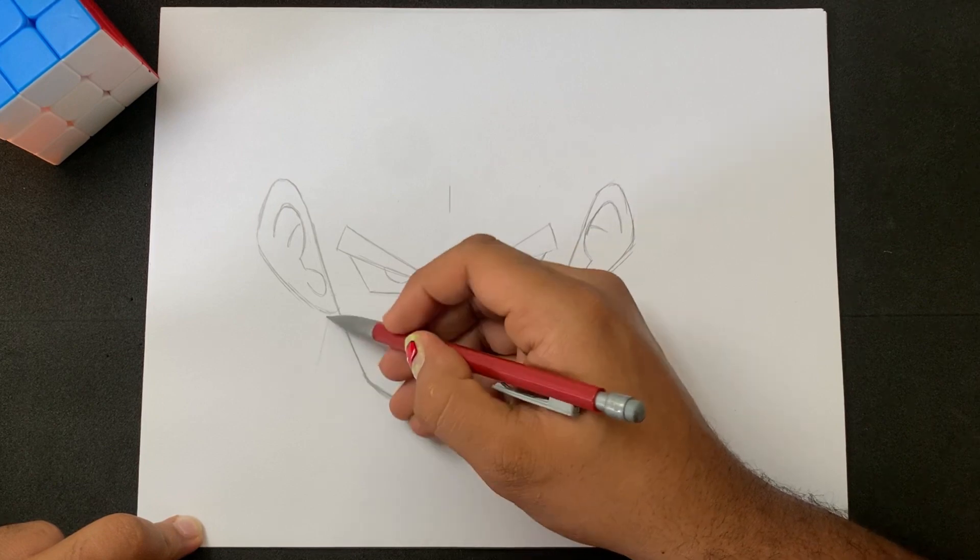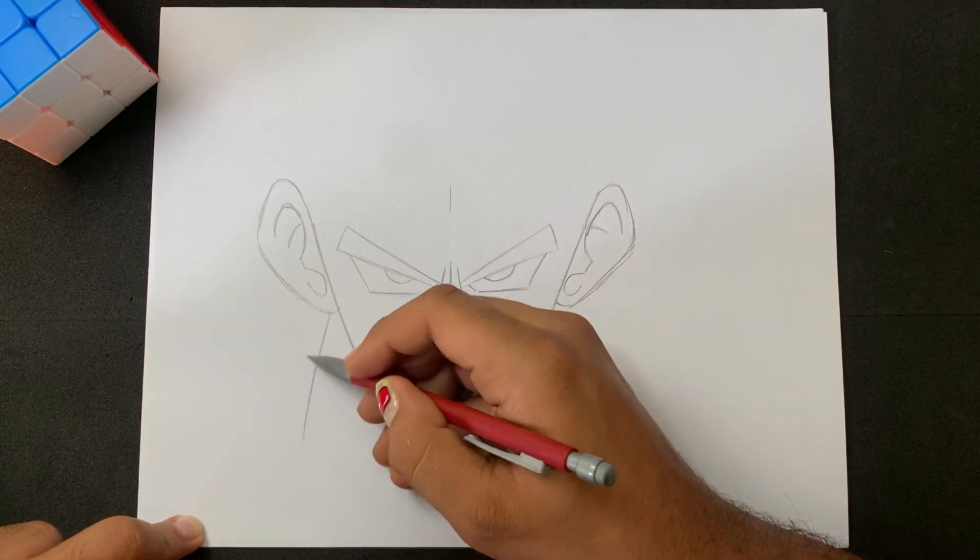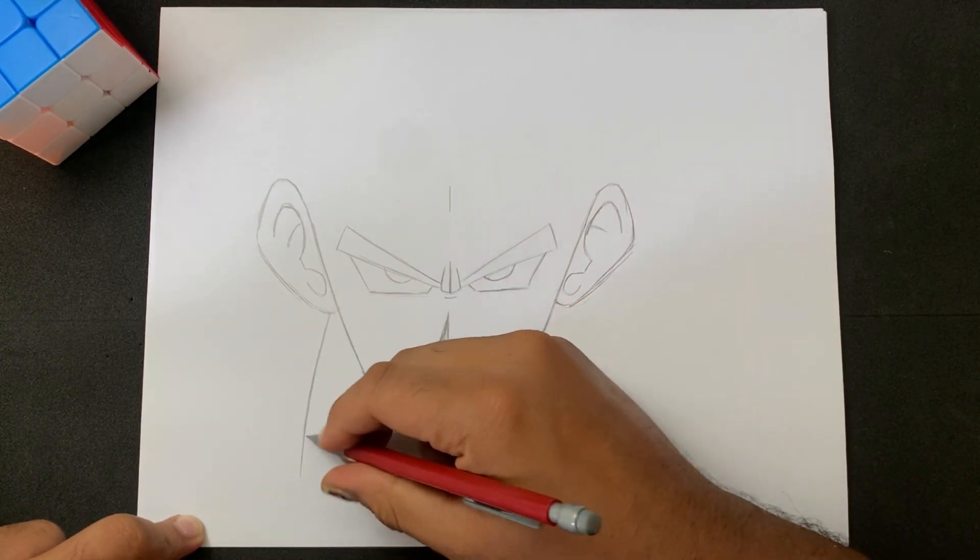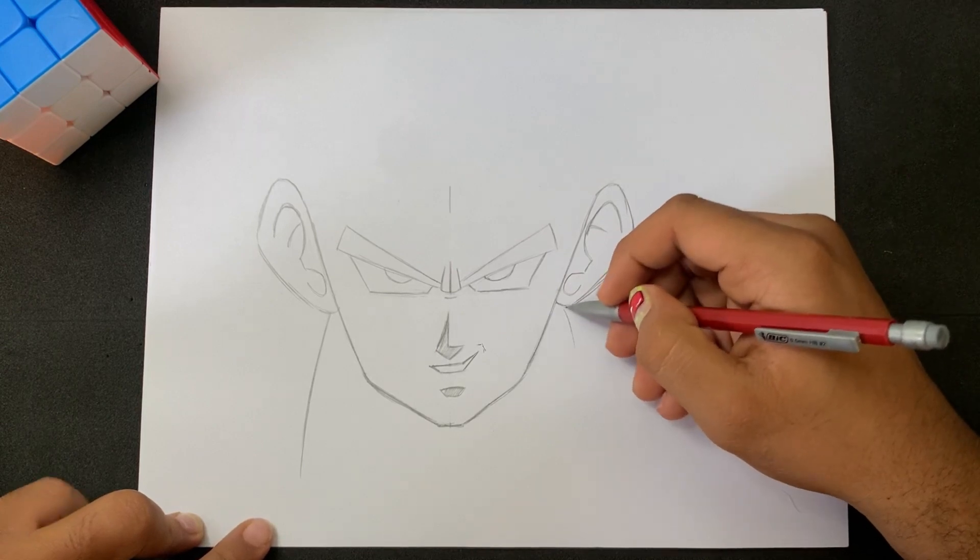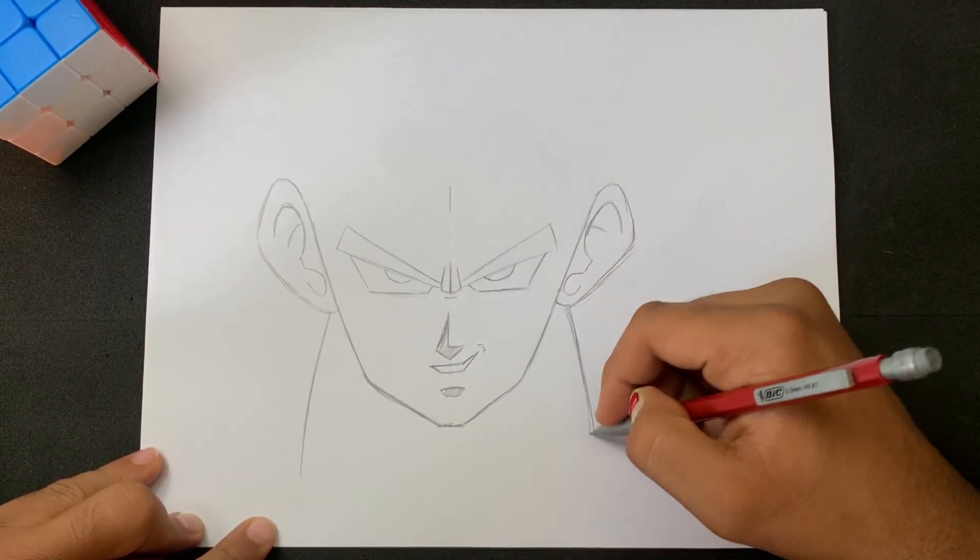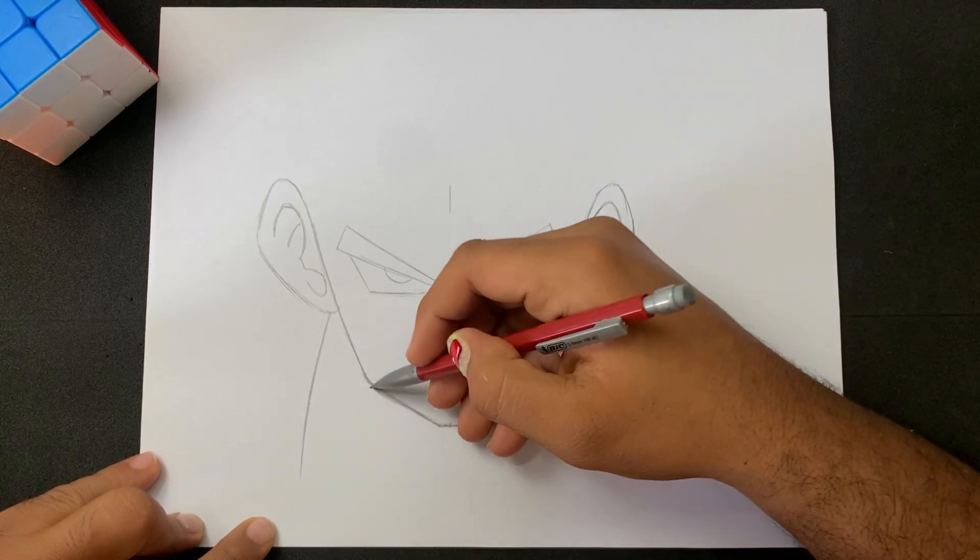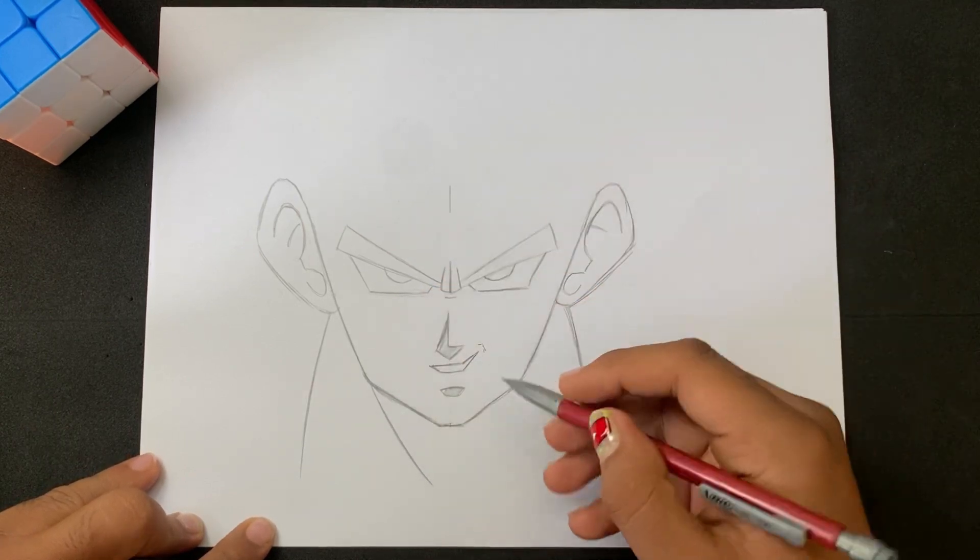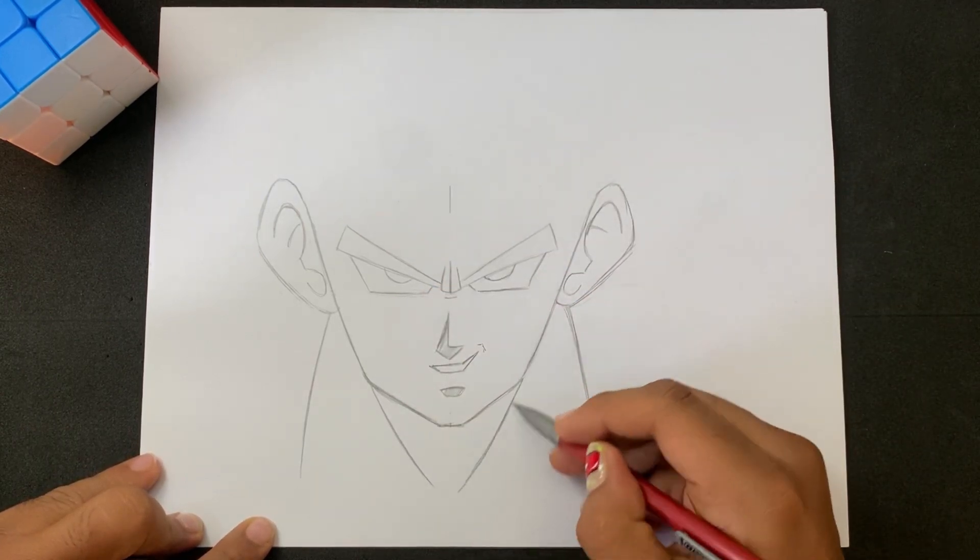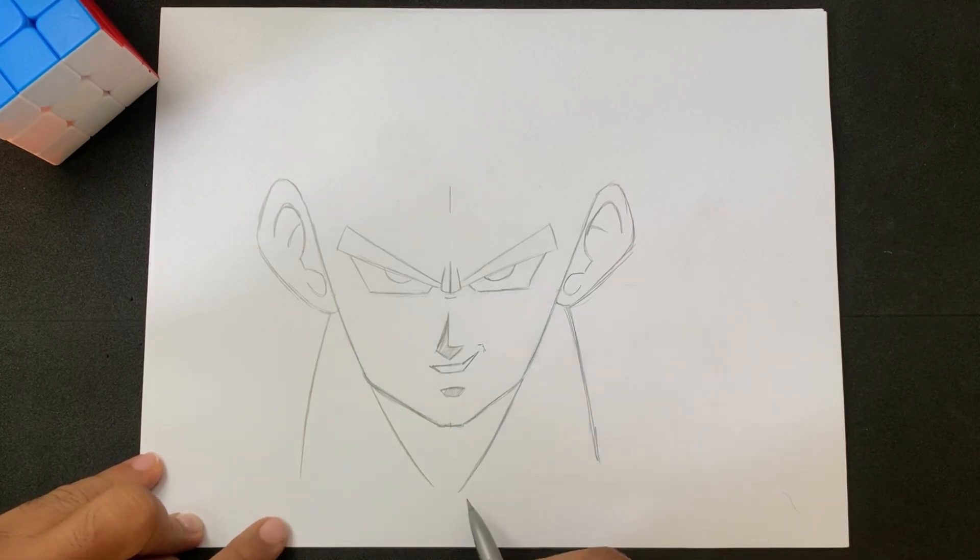Now let's draw the neck. By the way guys, pay close attention to the hair shape. Each lock of hair is really important for this character, Goku Super Saiyan 1, drawing step by step in an easy way with a pencil.